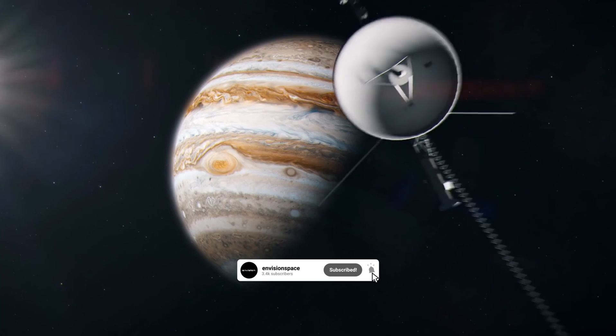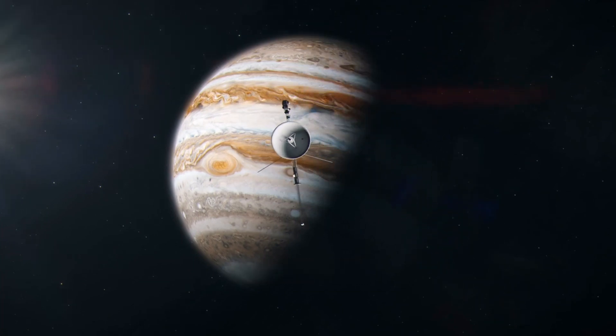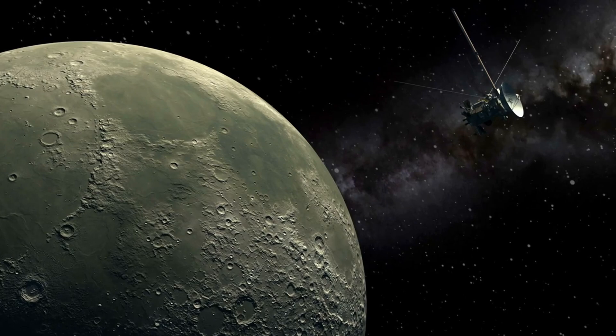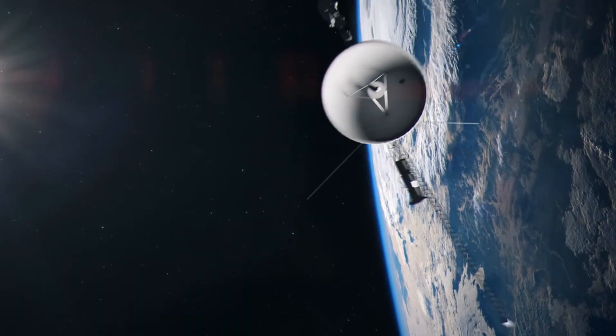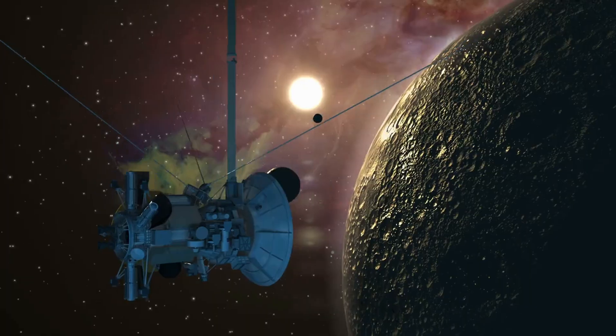The DSN is a collection of large radio antennas strategically placed around the Earth, such as in California, Spain, and Australia, to ensure continuous communication with different spacecraft as the planet rotates.